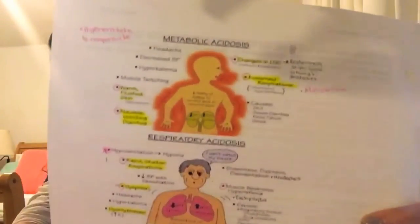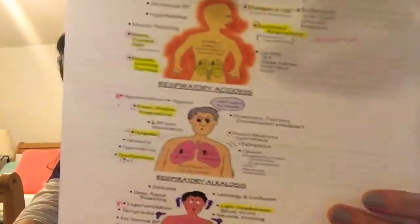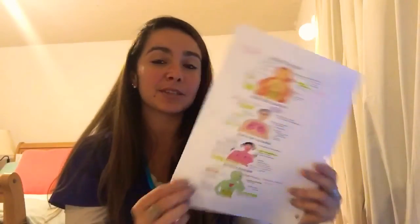I want to show you the chart I made — I got it from Pinterest so you can do the same. I have all my signs and symptoms listed and I spent a lot of time just staring at it. This is all you need to know for ABGs, and then you need to know how to analyze whether it's respiratory or metabolic. That covered our exam two.